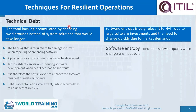First, technical debt. This is the total backlog accumulated by choosing workarounds instead of system solutions that would take longer. Technical debt occurs because of a quick fix developed to speed up a slow application, which may lead to data corruption that needs to be fixed afterwards. The word 'debt' is important — it is an accumulated list of issues when workarounds instead of proper solutions are used. The backlog required to fix damage incurred when repairing or enhancing software. A proper fix for a workaround may never be developed; however, technical debt should be minimized in such cases.